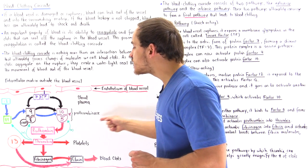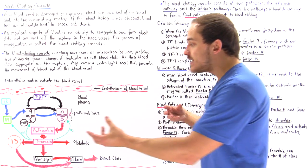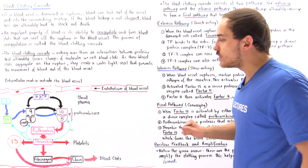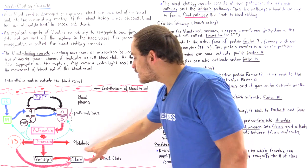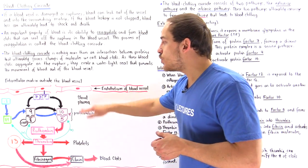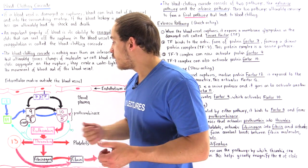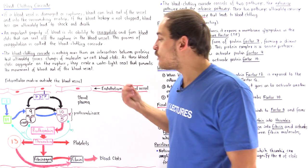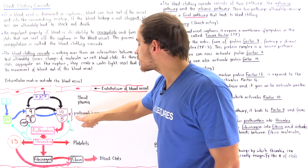Factor ten combines with factor five to form a dimer complex called prothrombinase. We call it prothrombinase because it activates prothrombin into its active form, thrombin. Prothrombin is formed in the liver, released by liver cells into the blood, and circulates until it is activated by the prothrombinase complex. All of these enzymes are circulating in close proximity inside our blood.